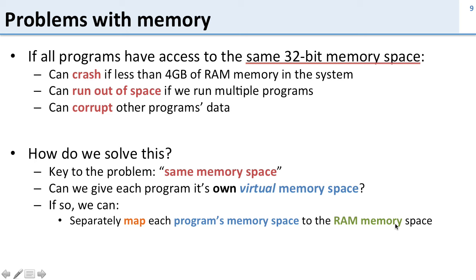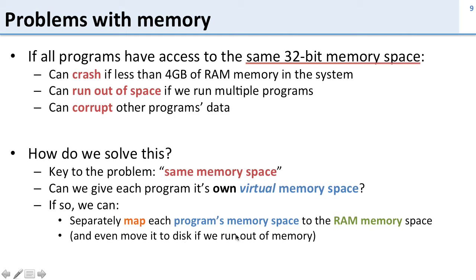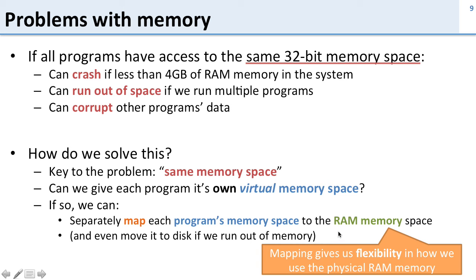With virtual memory we have a separate memory space for each program — called its virtual memory space — and a memory space for the RAM called the physical memory space. In the middle we have a map that maps program memory spaces to the RAM memory spaces. That's really all virtual memory is. We can solve problems like holes in memory and data corruption. We can also move data to disk — if we run out of memory, we can map some of the program's memory space to disk instead of RAM, using the hard disk as memory. That's where the term virtual memory comes from — it's not real memory, it's virtual.